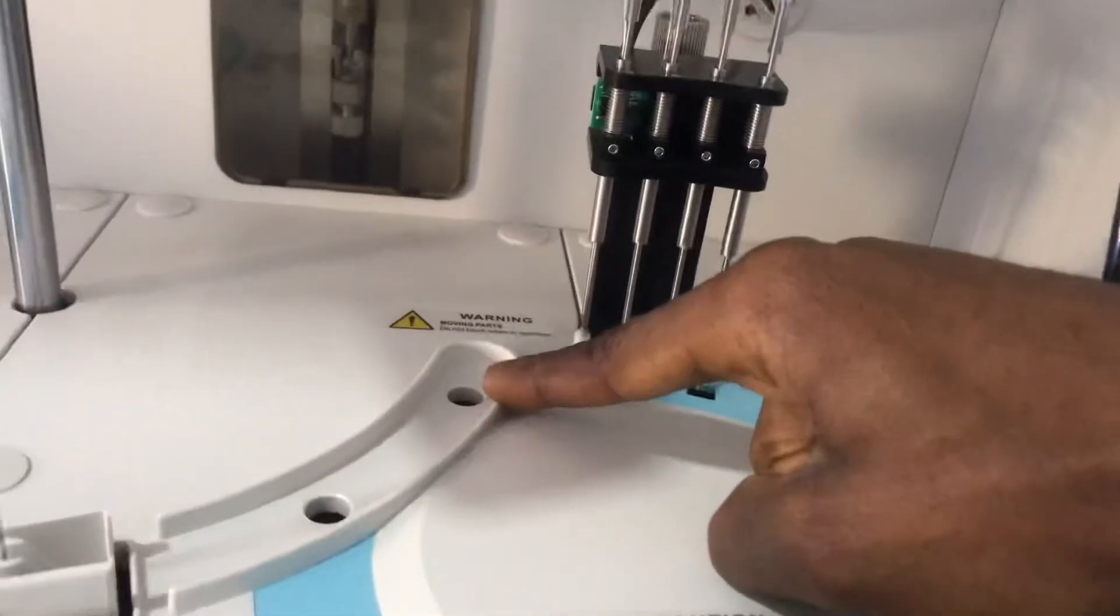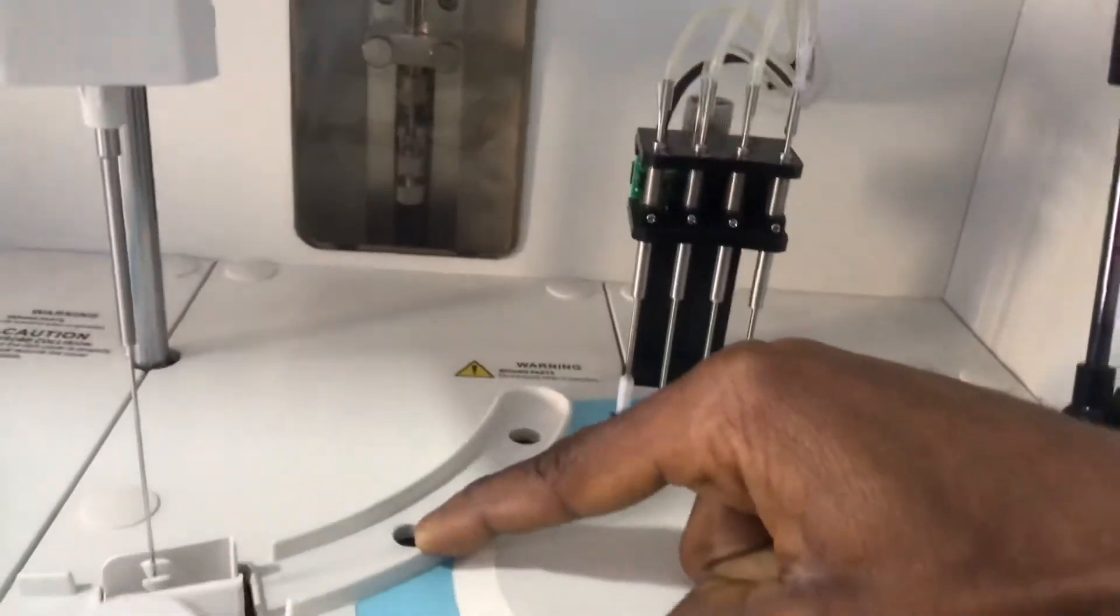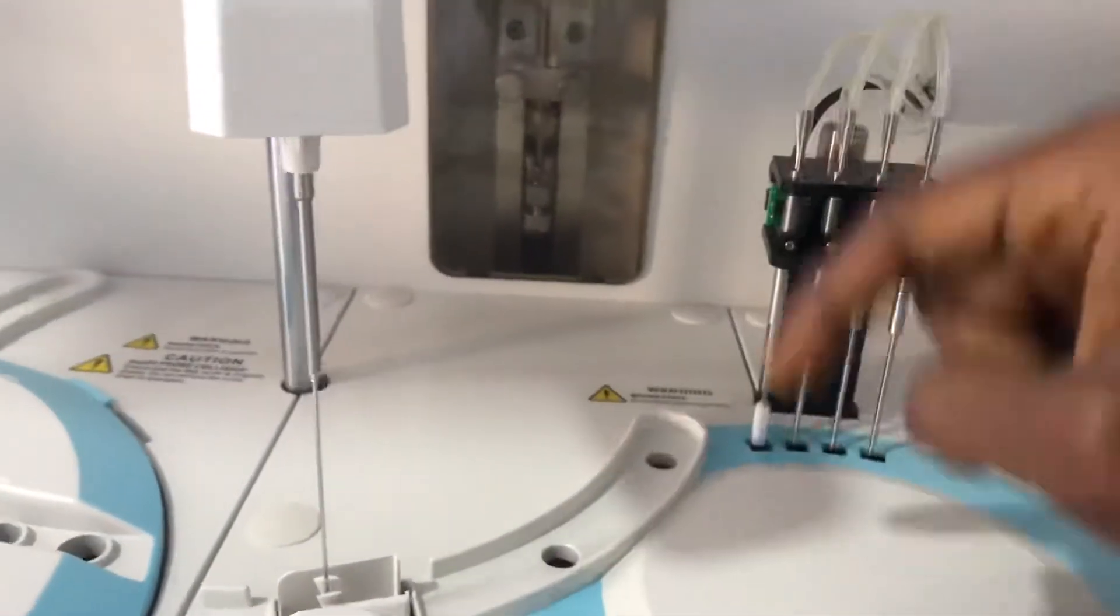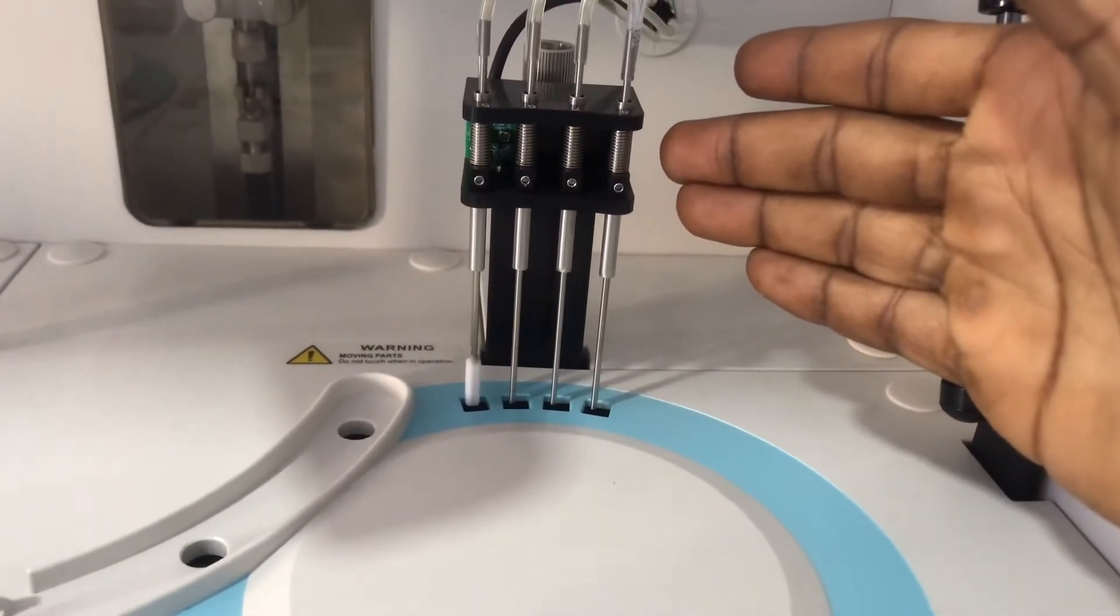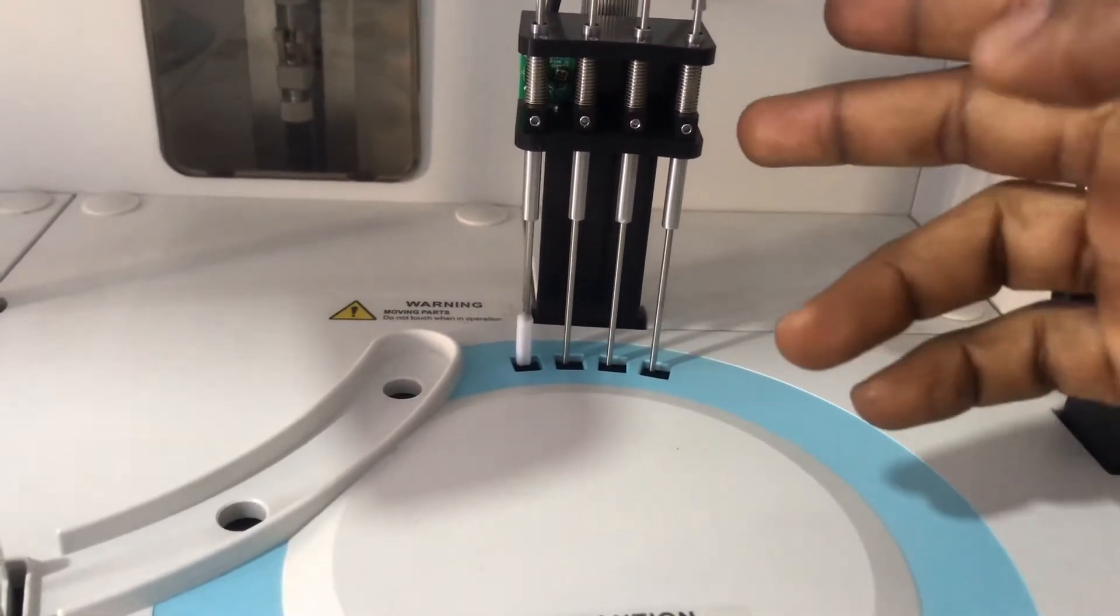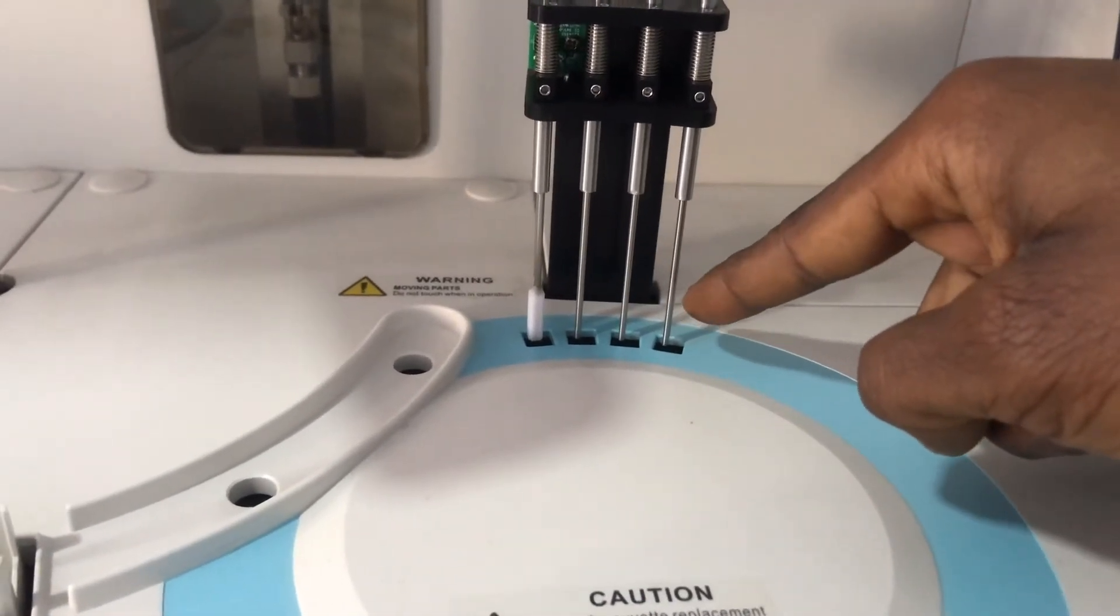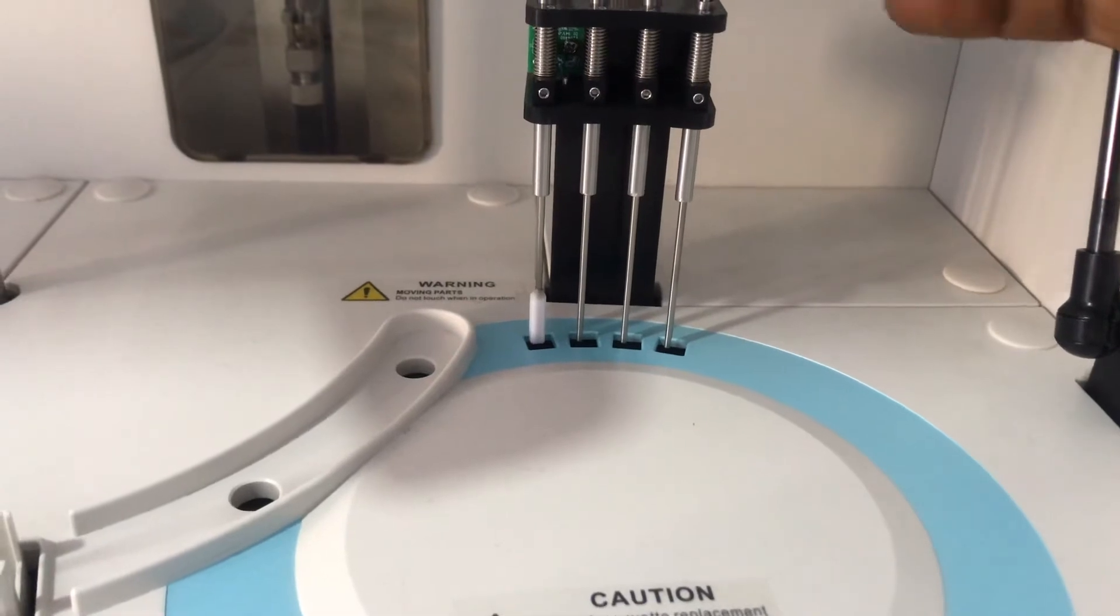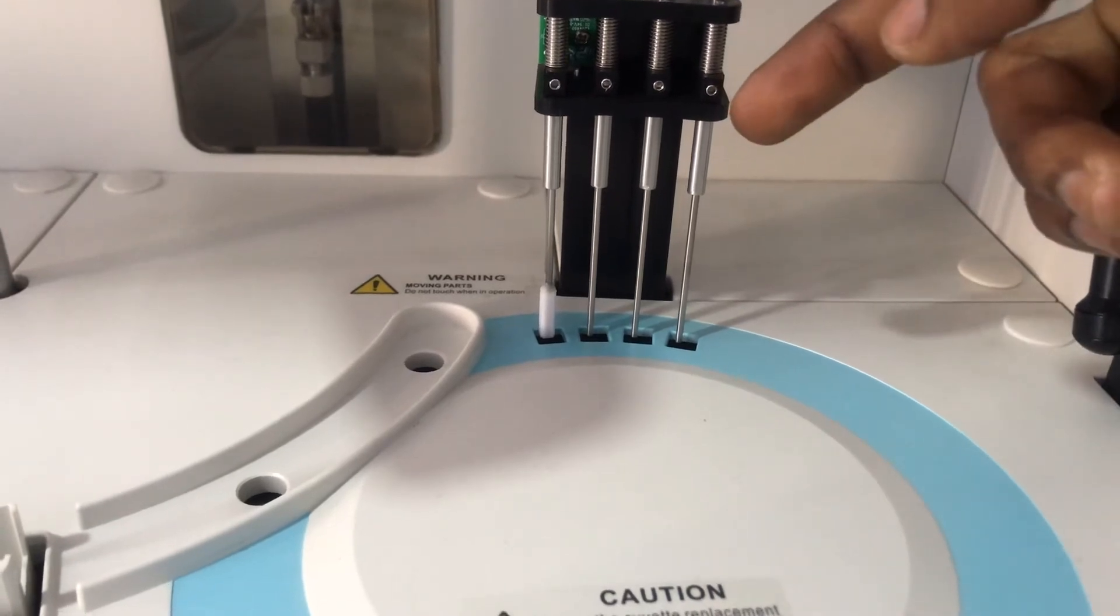There's an R1 dispense position where reagent one is dispensed, and this R2 dispense position where reagent two and the sample is dispensed by the dispenser. Here we have the eight-phase wash that the BS-240 supplies. These probes are connected to the fluids and help to wash the cuvette, and this one does the wiping.